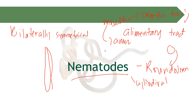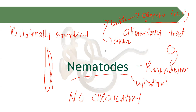The alimentary tract is the tubing that connects the mouth and the anus of the nematodes. Even though they have a digestive tract, it is important to know that our nematodes have no circulatory system — nematodes have no heart. Even though they don't have a circulatory system, they have separate sexes.